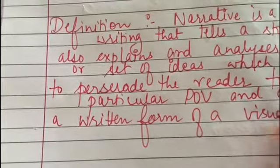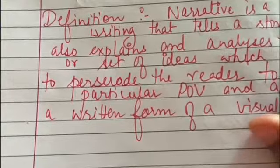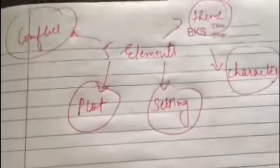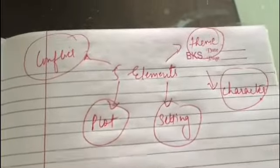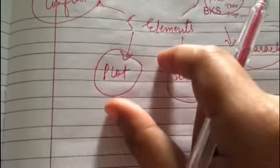Now we'll do the five main elements of narrative writing. First is the plot. What is a plot? Plot is the thread of events that occur in a story.